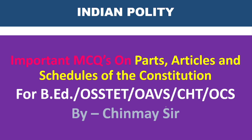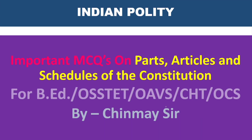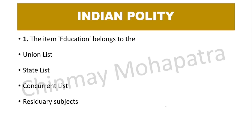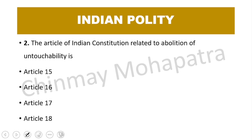Parts, articles, and schedules of the constitution for all competitive examinations. Question number 1: The item 'education' belongs to which list? The right answer is the Concurrent List. This is a most popular question, and sub-questions from this topic are also important from an exam point of view.